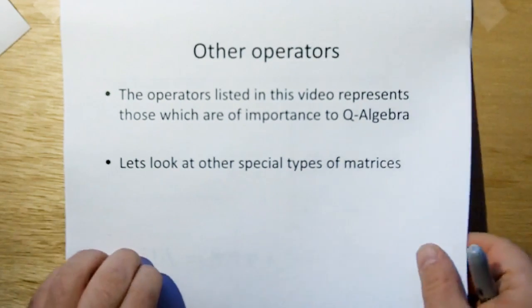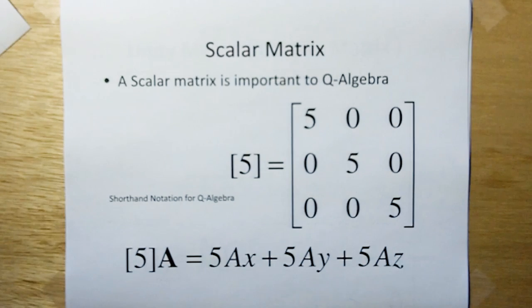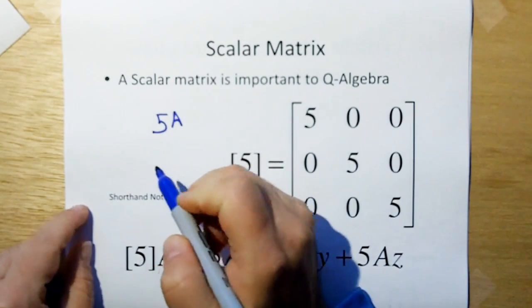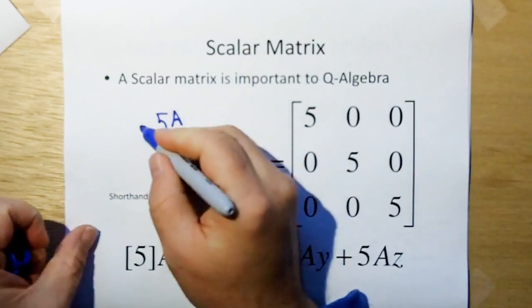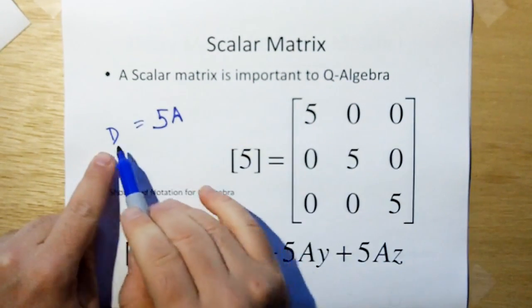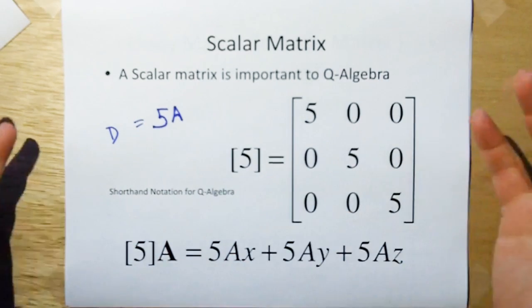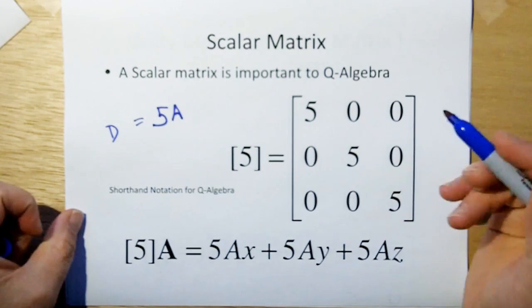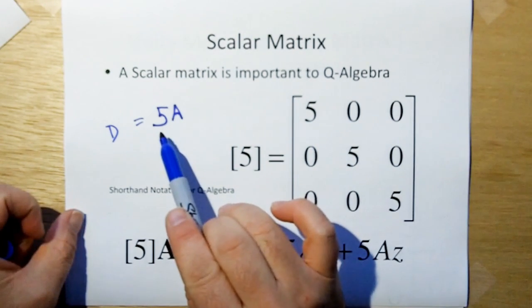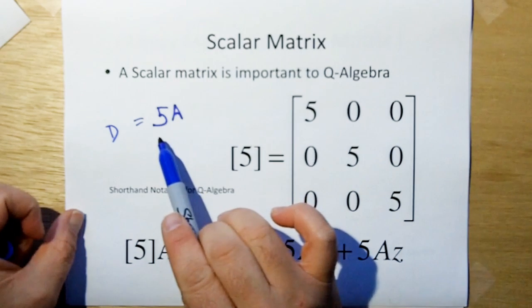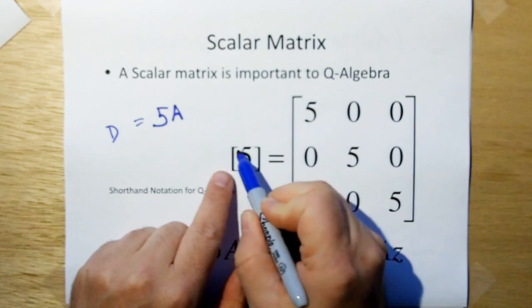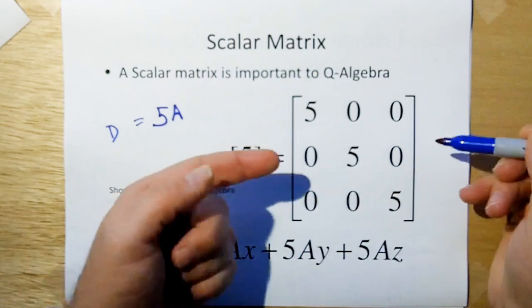Let's look at some special types of matrices. A scalar matrix is an important matrix to Q algebra. What's a scalar matrix? Well, if I take the vector A and I multiply it by the scalar 5, I get now a vector that's 5 times bigger than A. The result D, the resultant D vector is now going to be 5 times bigger than A. So I've scaled up the matrix A. That's called a scalar. It scales.